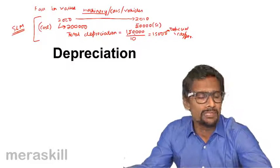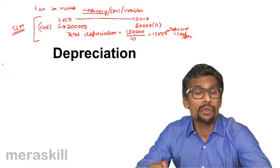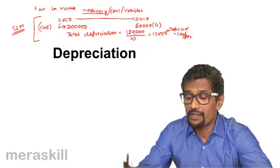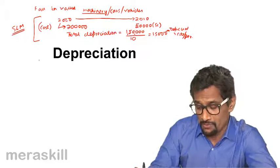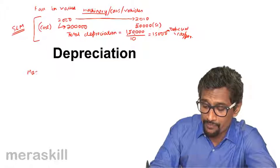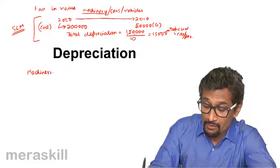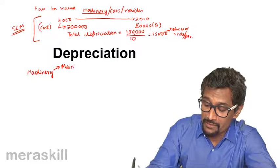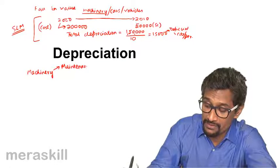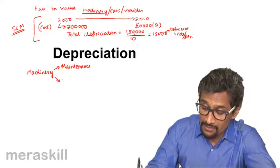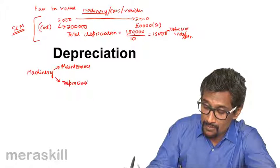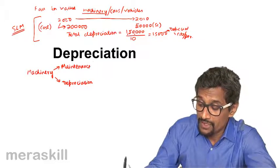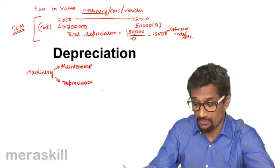Because there are so many assumptions made in this. However, in real life, we do not do it this way. Because whenever you are talking about machinery, suppose you talk about any machinery, machinery requires a lot of maintenance. It has a lot of maintenance, and then there is depreciation. These two together help in the fall in the machinery.